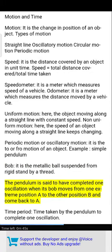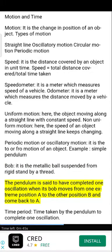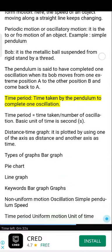The pendulum is said to have completed one oscillation when its bob moves from one extreme position A to the other position B and comes back to A. Time period: time taken by the pendulum to complete one oscillation.